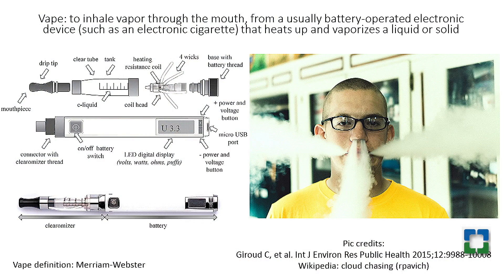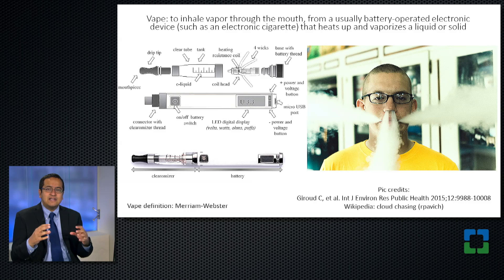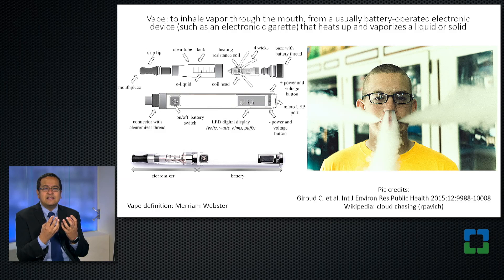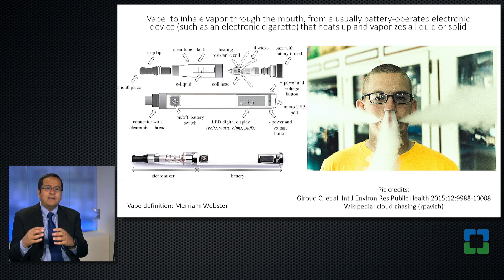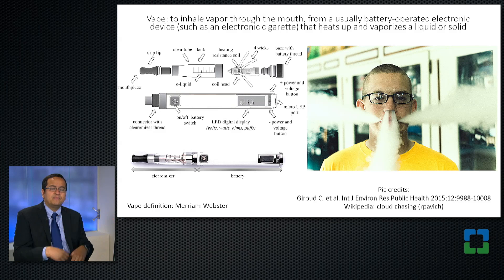Just a little bit of an introduction for vaping. What does it mean to vape? To vape is to inhale vapor through the mouth from a usually battery-operated electronic device — the classic example being an electronic cigarette. That device heats up the fluid within it, the vape fluid, and vaporizes this liquid to make the vapor that's inhaled. On the left-hand side of this slide, you see a vaping device with a battery, a place to hold the fluid, and a place where the vapor comes out.